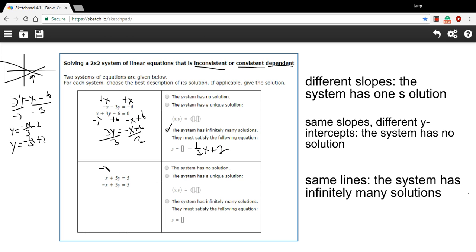Let's see what we've got over here. I'm going to subtract x on the first equation here. 5y equals negative x plus 5. And then we'll divide by 5.